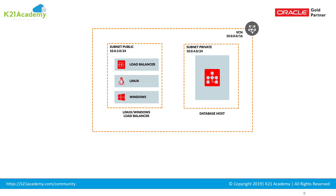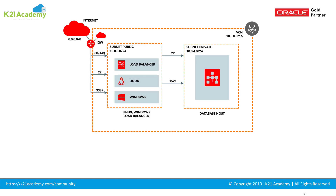In the public subnet we create a load balancer, a Linux machine, and a Windows machine — those machines will be created in their respective modules, while in this module we create the network components for them. The load balancer listens on port 80 or 443. Linux listens on port 22. Windows RDP listens on port 3389. The database host Linux machine listens on port 22, and the database listener on port 1521 by default. This means we need to open these ports at the subnet level — but for the database host ports like 22 and 1521, we only open them from the public subnet, not from everyone. For ports 80, 443, 22, or 3389 needing internet access, we open them from the internet.